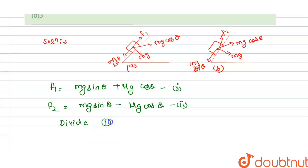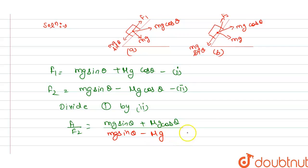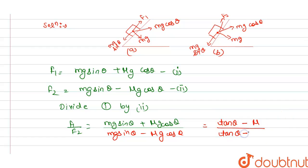Dividing equation 1 by equation 2 to get the ratio f1/f2: f1/f2 = (mg sin θ + μmg cos θ) / (mg sin θ − μmg cos θ). Cancelling m and g, and dividing numerator and denominator by cos θ, we get f1/f2 = (tan θ + μ) / (tan θ − μ).